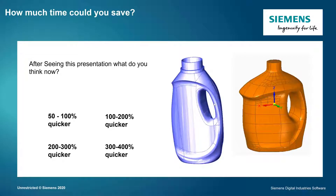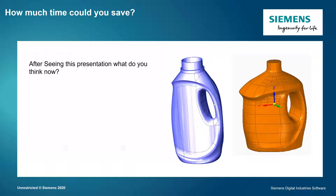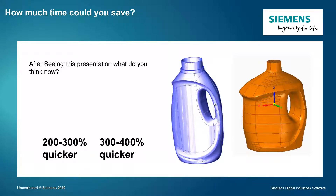So how much time could you save? After seeing this presentation, depending on the complexity of the part — maybe more, maybe less — but somewhere between 200% and 400% quicker if you're using this tool. It allows you to get your concept quickly without wasting time having to rebuild it. You can get your concept as it is and then use your traditional modeling methods if that's how you want your final model. It gives you a really quick and nice tool for doing those conceptual designs.